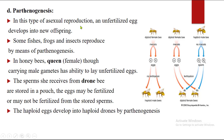Fourth is parthenogenesis. In this type of asexual reproduction, an unfertilized egg develops into new offspring. Parthenogenesis is similar to parthenocarpy, which we discussed in plants — like development of fruit without seed. It is common in some fishes, frogs, and insects. The common example is honeybee. Honeybees have a female used to lay eggs, known as the queen. The rest are workers, and the males are known as drones.